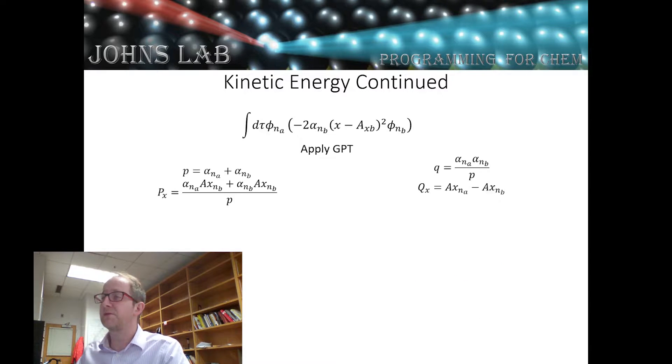The first step is we're going to apply the Gaussian product theorem for this primitive Gaussian in a times primitive Gaussian in b. We're going to get our new exponent p and the new location for the center of the new Gaussian, which we're going to call px.